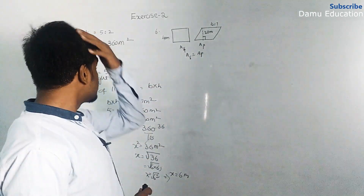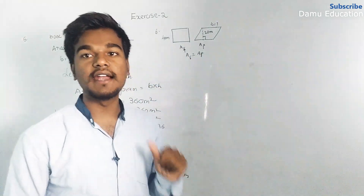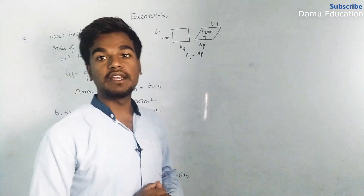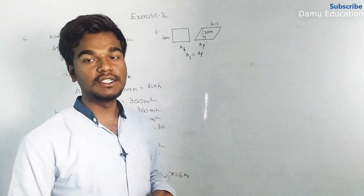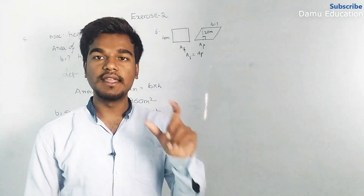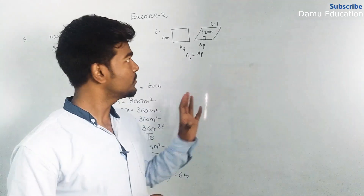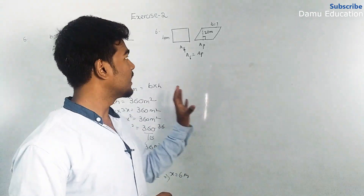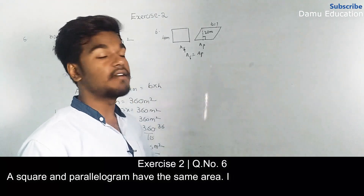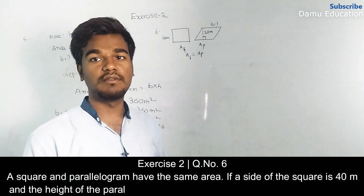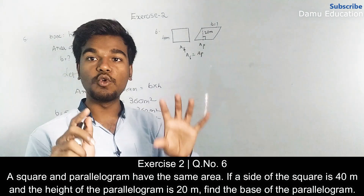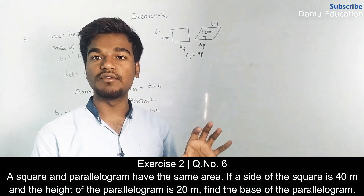The next question: the area of a square and a parallelogram are the same. For the square, one side is given as 40 meters — since all sides are equal, all sides are 40 meters. The height of the parallelogram is given as 20 meters. We have to find the base of the parallelogram by equating both areas.